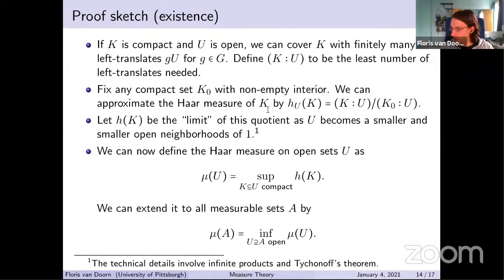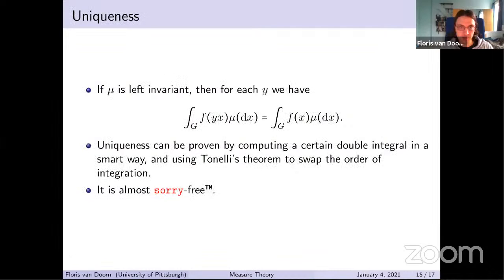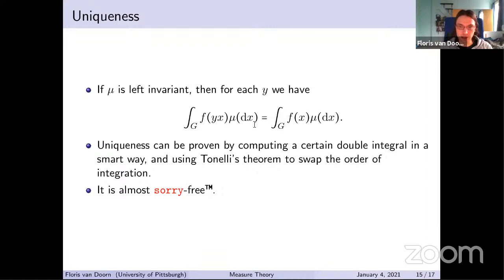For the uniqueness proof, if we have a left invariant measure, integrals are also left invariant. We compute uniqueness by evaluating a certain double integral in two smart ways, using Tonelli's theorem to swap the order of integration, and conclude that the two measures are multiples of each other. I've formalized this locally and it's almost sorry-free, which hopefully means it will be finished soon.